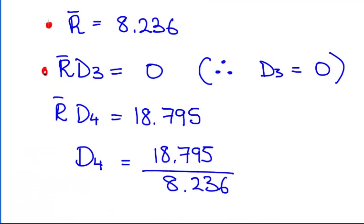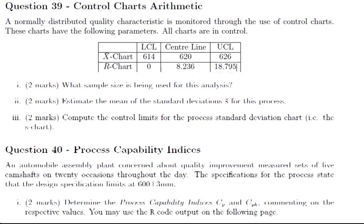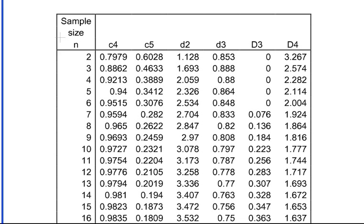So R bar D3, as it turns out, is equal to 0, and that means D3 is equal to 0. That actually would serve as a big hint very soon. Similarly, R bar D4 is equal to the upper control limit. But if we divide R bar D4 by R bar, we just isolate D4. So that is 18.795 divided by 8.236, and that works out to be 2.282. So we know what D3 and D4 is.